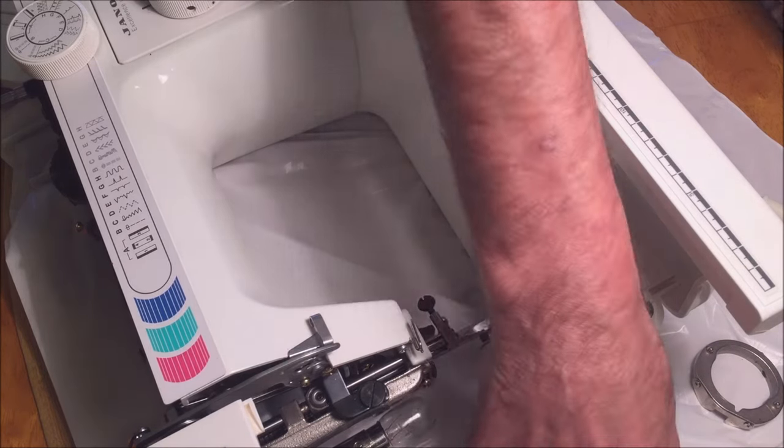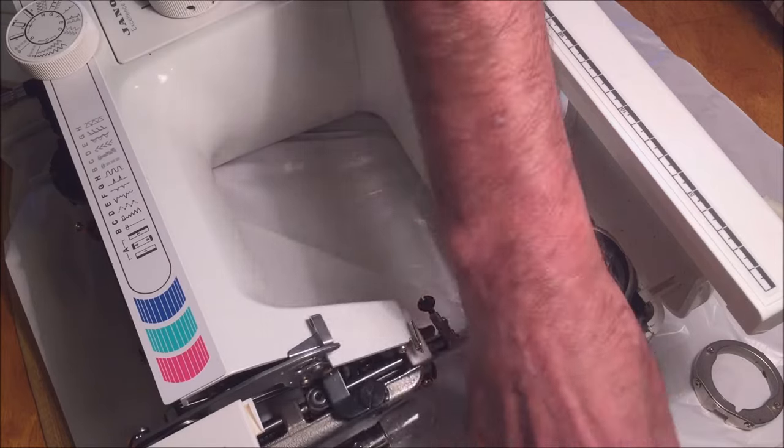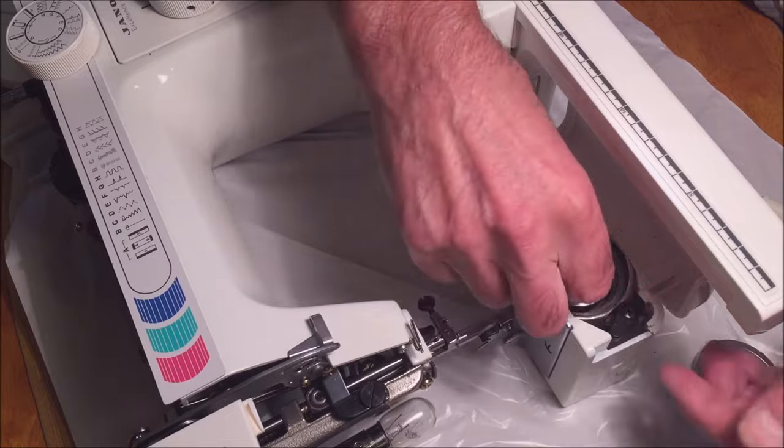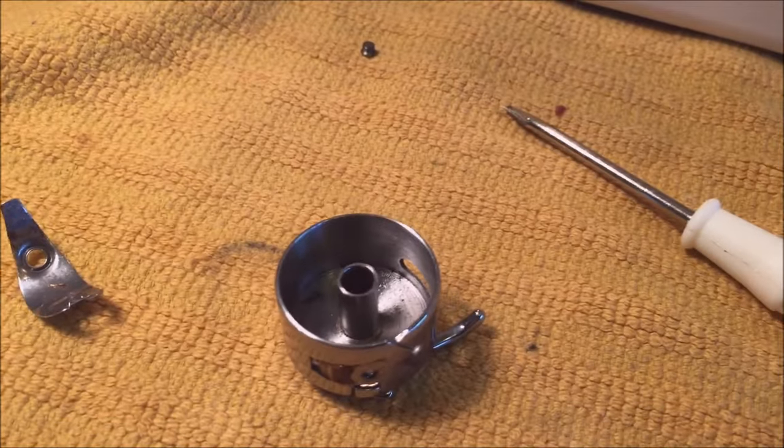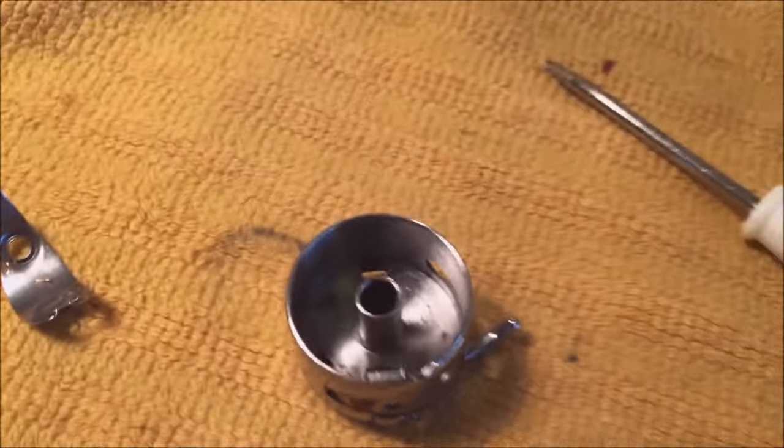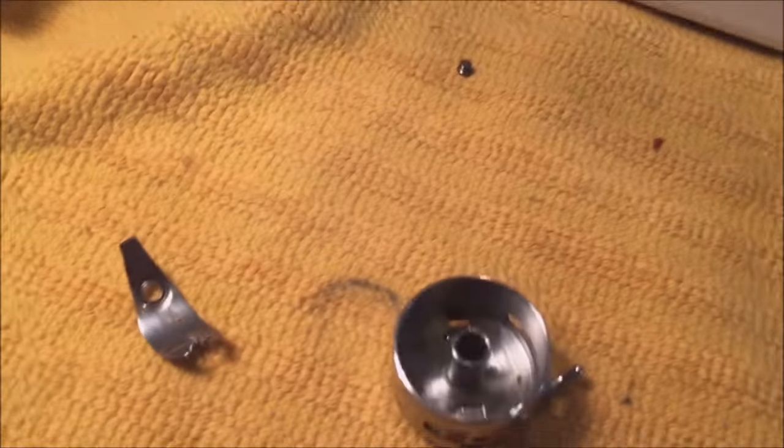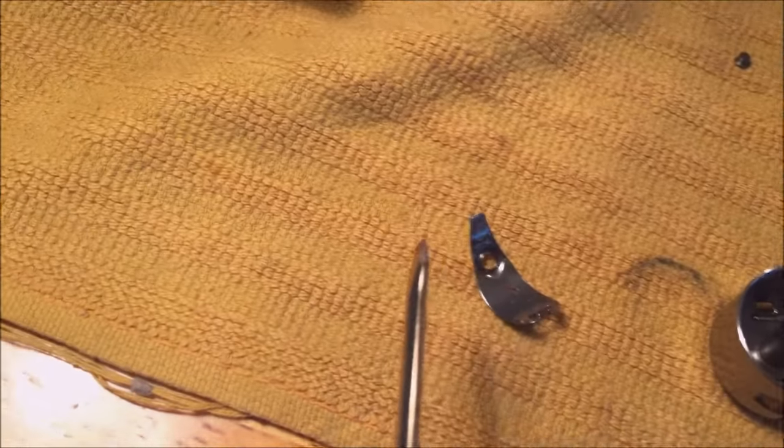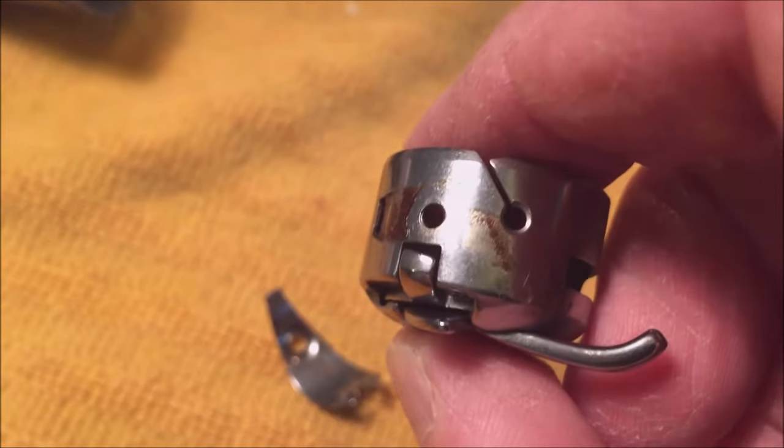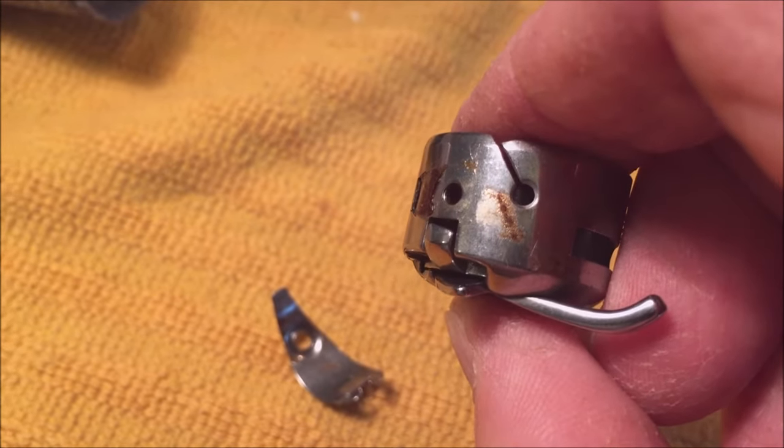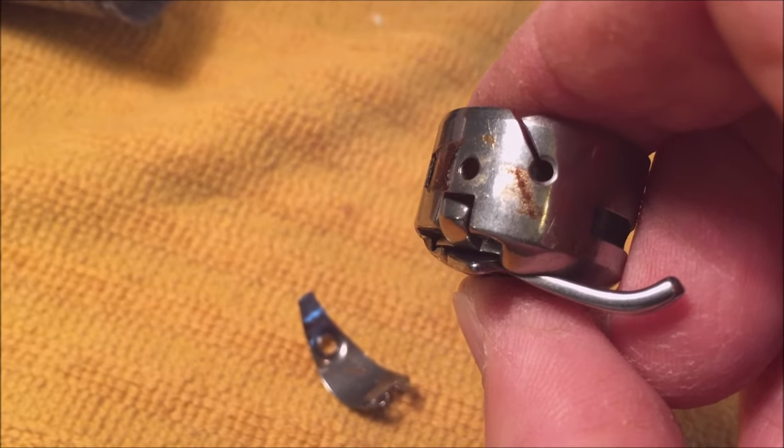Now that I cleaned off all the gunk from in here in the bobbin case, I was threading the bobbin and the thread wasn't pulling through the bobbin case properly. There's sticky stuff right in there. I'm gonna have to clean it and the inside of the case also. And right along in there, see it there? I'm gonna have to clean that. That's what's making it stick.